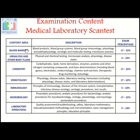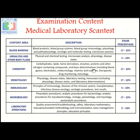From the blood banking section, there will be about 17 to 22 questions covering blood products, blood grouping systems, blood group immunology, physiology and pathophysiology, serologic and molecular testing, and transfusion practice. From urinalysis and other body fluids, expect 5 to 10 questions on physical and chemical testing, microscopic analysis, and disease states. From chemistry, there will be 17 to 22 questions covering carbohydrates, lipids, enzymes, proteins, acid-base determination including blood gases, and electrolytes.